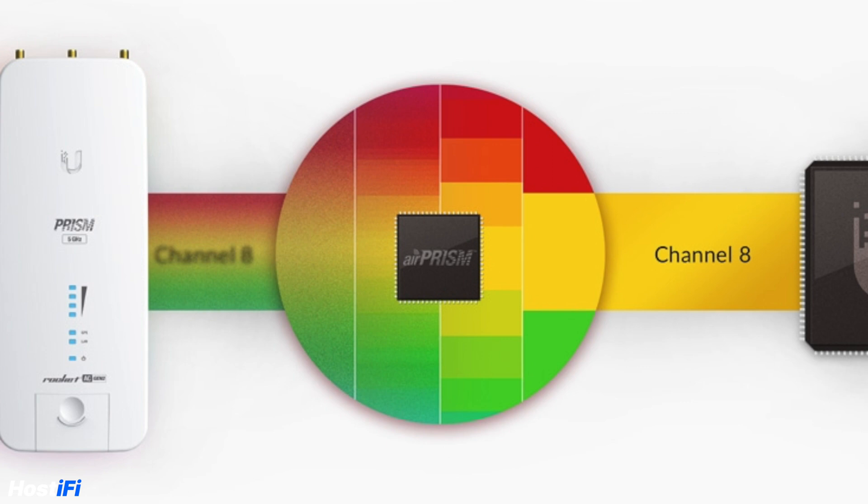Air Prism was designed by the Ubiquiti R&D team and uses a dedicated chip to ignore co-located interference and help improve throughput for the network. The Rocket Prism 2AC, Prism 5AC, the 5AC PTMP, and the Prism station all support Air Prism.